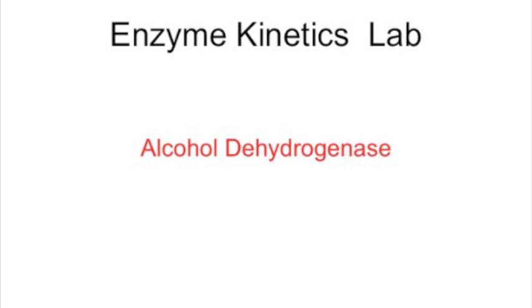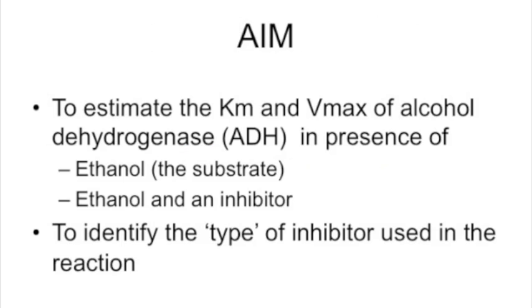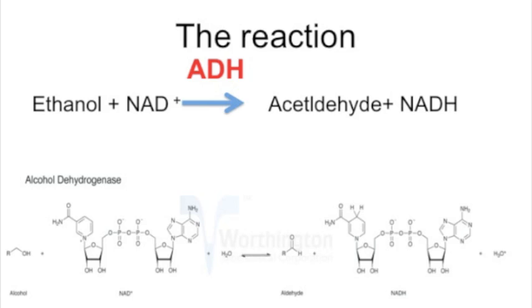This short video will give you an introduction to the lab enzyme kinetics that you will be carrying out in BS1002. The main aim of the experiment is to estimate the KM and VMAX of alcohol dehydrogenase in the presence and absence of an inhibitor, and also to identify what type of inhibitor you will be working with.